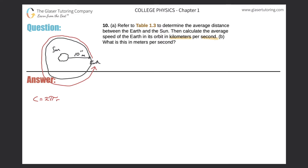Remember, the circumference of the circle I drew is really the distance the Earth will travel. So let's calculate that. Circumference equals two times pi times the radius, which was 10 raised to the 11 — and that's in meters. So the circumference of the orbit is two times pi times 10 raised to the 11, which works out to be approximately 6.3 times 10 to the 11 meters.